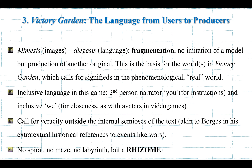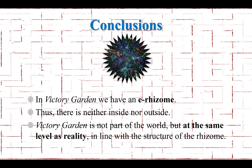Interestingly too, this is no spiral and no maze, of course much farther away from the form of a labyrinth. But what we find in Victory Garden takes the form of a rhizome — a specific kind of rhizome with the peculiarities I have mentioned. Finally, as conclusions for this research: in Victory Garden we have an electronic rhizome, not with every characteristic that Deleuze and Guattari put forth, but with the nuances of the electronic and digital medium enacted in this story. Therefore, there is neither inside nor outside, because these boundaries are blurred given the historical references Moulthrop continuously makes to the external world. Victory Garden is not part of the phenomenological world but at the same level as reality, following the structure of the rhizome. Thank you very much.